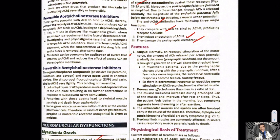With that we complete the introduction to myasthenia gravis. Now we have the clinical features. The first feature is fatigue — this fatigue is a general weakness in the muscles.